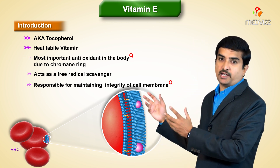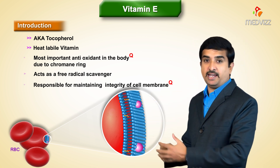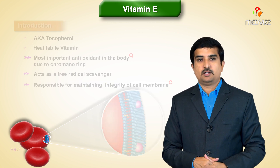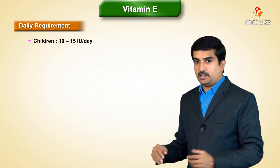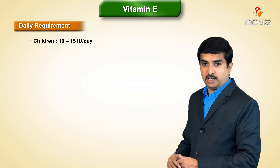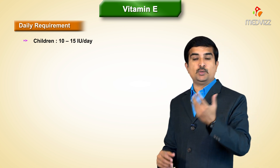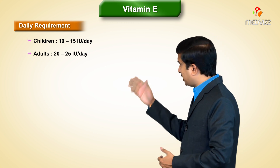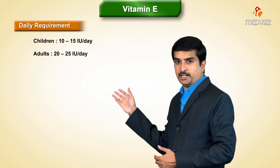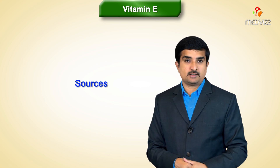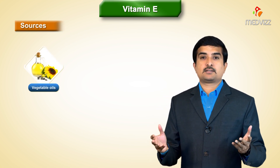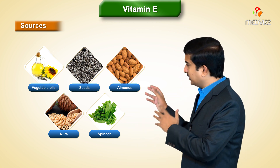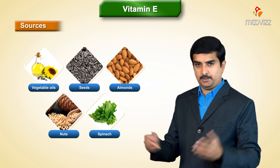Vitamin E maintains cell membrane integrity by fighting with peroxides which are produced continuously inside the cell, especially in RBCs. The daily requirement in children is approximately 10 to 15 international units per day, and in adults it is approximately 20 to 25 international units per day. Good sources include vegetable oils, sweets, almonds, nuts, and spinach.